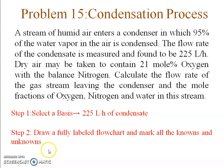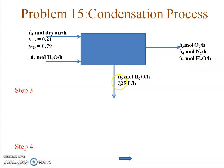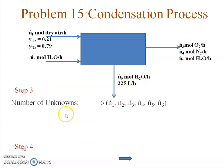Next, I draw a fully labeled flowchart and mark all knowns and unknowns. The unknown Ṅ1 is the dry air flow rate entering; Ṅ2 is the water entering with the dry air; Ṅ3, Ṅ4, Ṅ5 are the oxygen, nitrogen, and water vapor leaving with the air; and Ṅ6 is the molar flow rate of the condensate (the volumetric flow rate is known). Counting unknowns: Ṅ1, Ṅ2, Ṅ3, Ṅ4, Ṅ5, Ṅ6 — six unknowns.